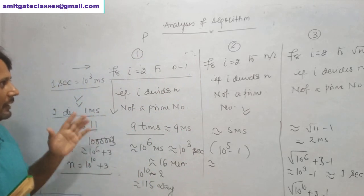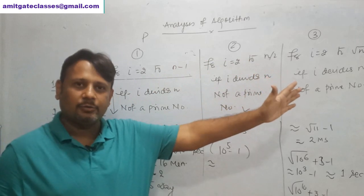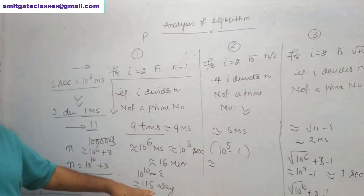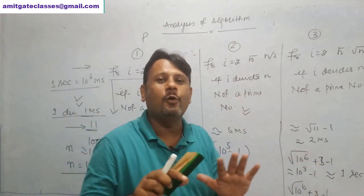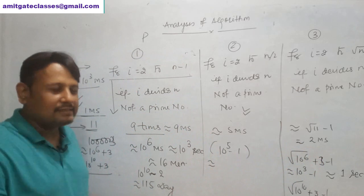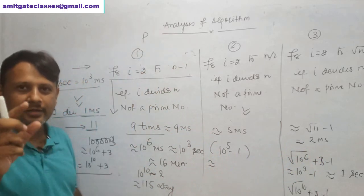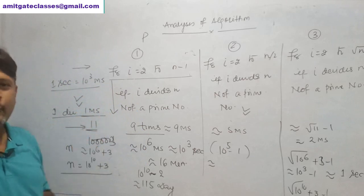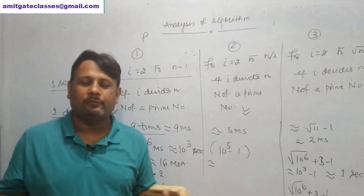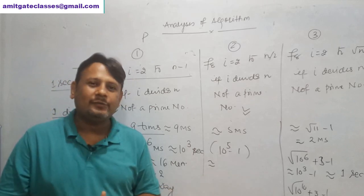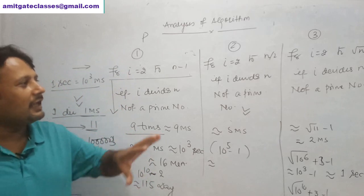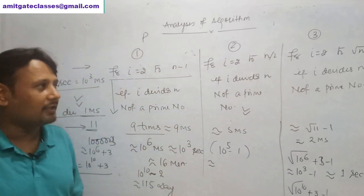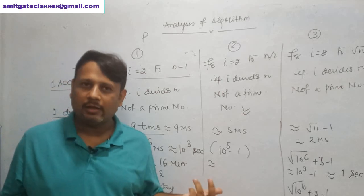Just imagine the importance of having a good algorithm. All three students gave correct solutions, but the difference in performance is enormous. No processor — i3, i5, or i7 — can reduce a work of 115 days to 100 seconds. As a computer scientist, you can change the world by writing a good algorithm. Writing a correct solution is not enough; you need to write a solution that takes minimum time.